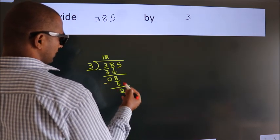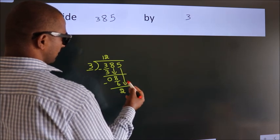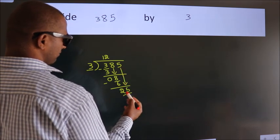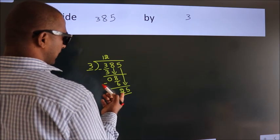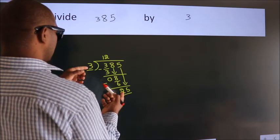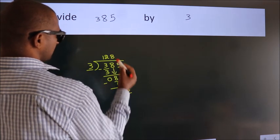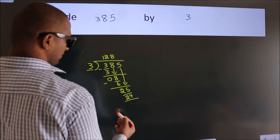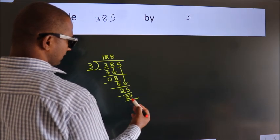After this, bring down the beside number. So, 5 down. So, 25. A number close to 25 in 3 table is 3 8s 24. Now, we subtract. We get 1.